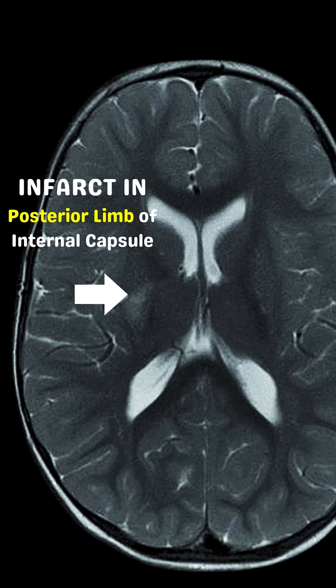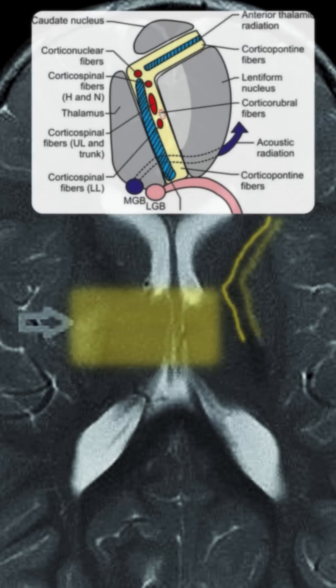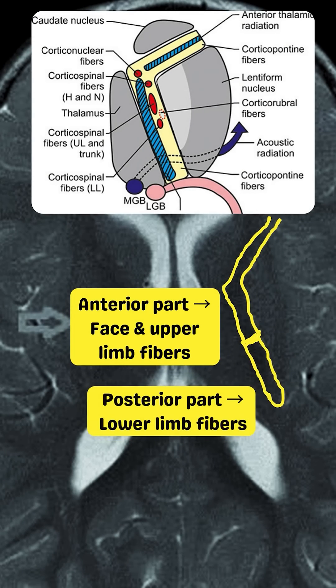Looking at the anatomy of the internal capsule, we have the anterior limb, genu, and the posterior limb. The posterior limb is further divided into an anterior part and a posterior part. Anatomically, the anterior part carries the face and upper limb fibers, while the posterior part carries more of the lower limb fibers.